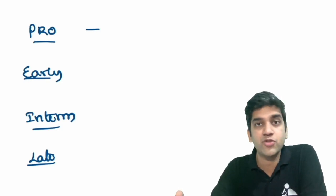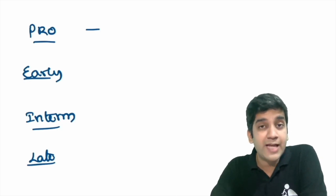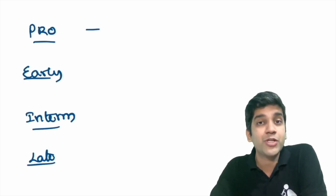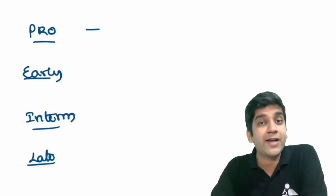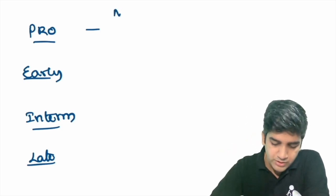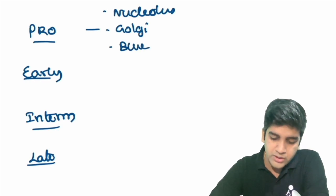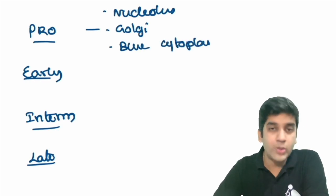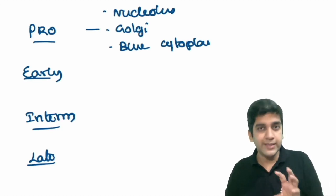The function of the pro-normoblast is to synthesize hemoglobin. The entire cytoplasm has a basophilic appearance because the protein hasn't been made yet — they have lots of mRNA that is very active. The nucleoli will be very prominent, the mRNA is active, and the Golgi apparatus will be prominent. Key pointers: you will see nucleoli, there will be a Golgi zone, and the blue cytoplasm is a classical appearance of a pro-erythroblast. They are also one of the largest cells.